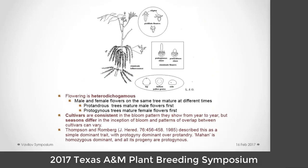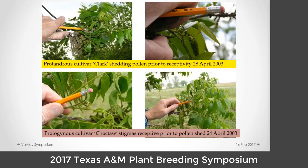In our genus, flowering is heterodichogamous, which means that male and female flowers are formed on the same tree but mature at different times. Protandrous cultivars mature male flowers first. Protogynous cultivars mature female flowers first. That separation of bloom encourages outcrossing. Cultivars are consistent in bloom pattern from year to year, but seasons differ, so cultivars often cross in different patterns. Thompson and Romberg described the trait as simple dominant, with protogyny being dominant.